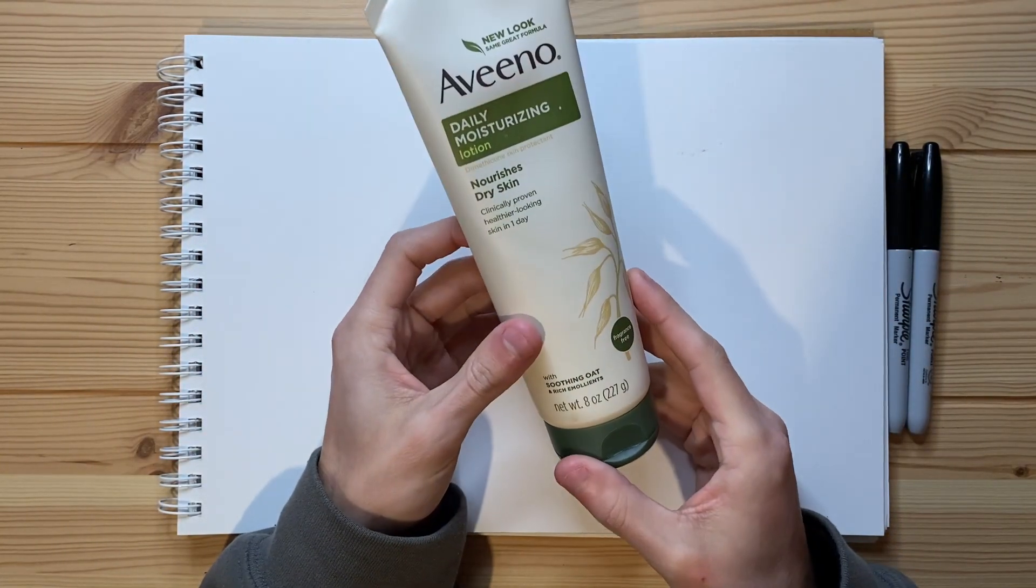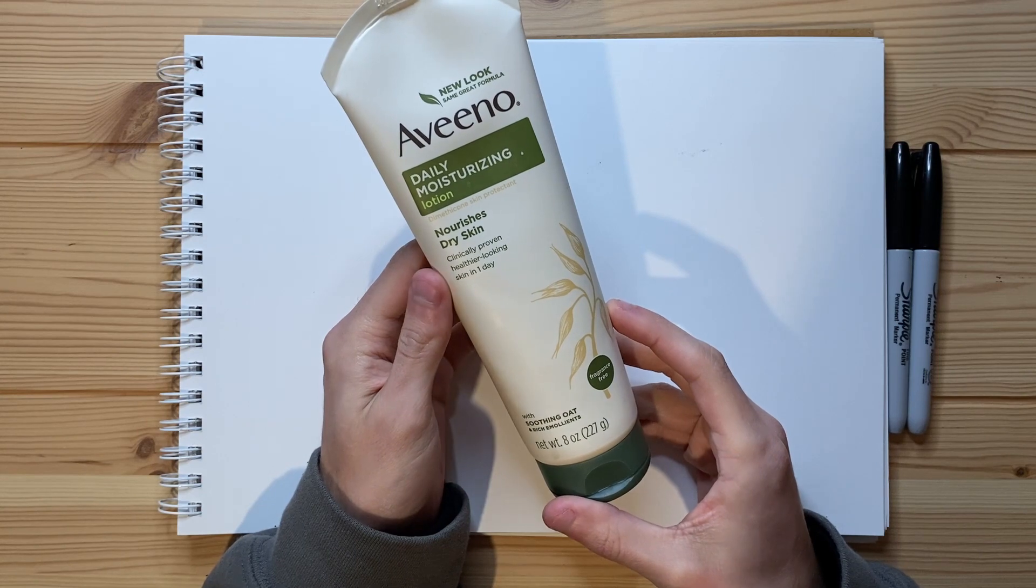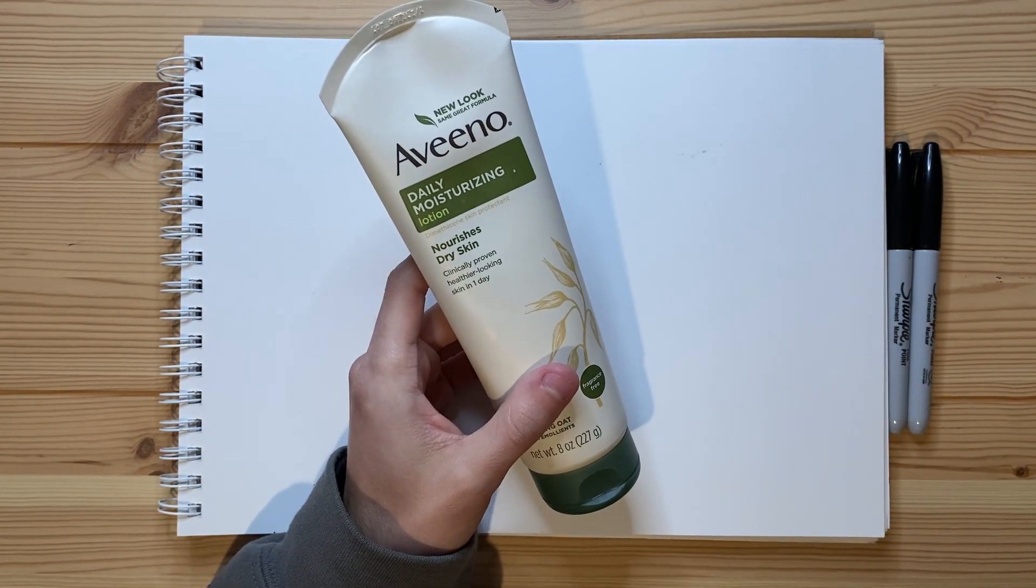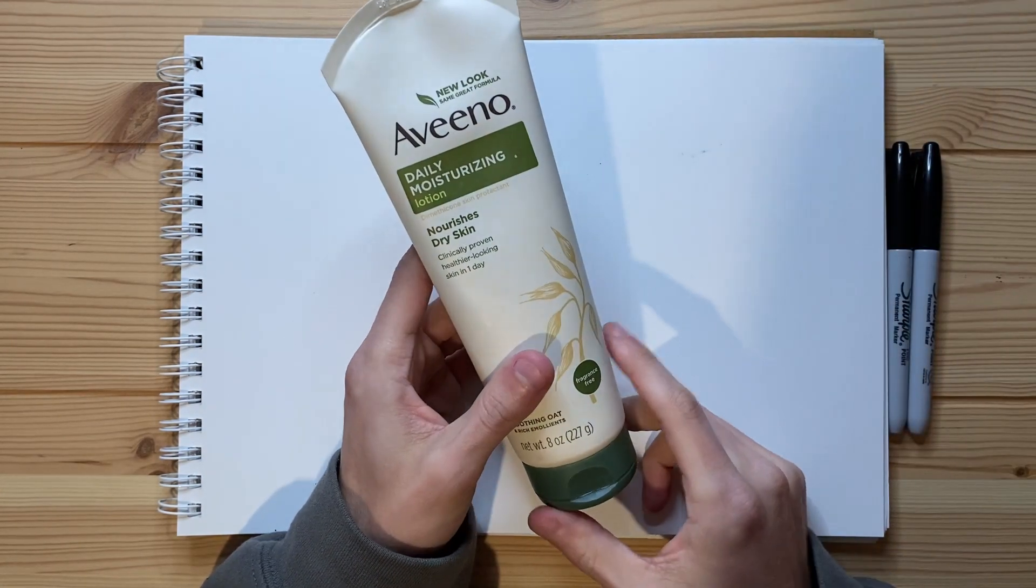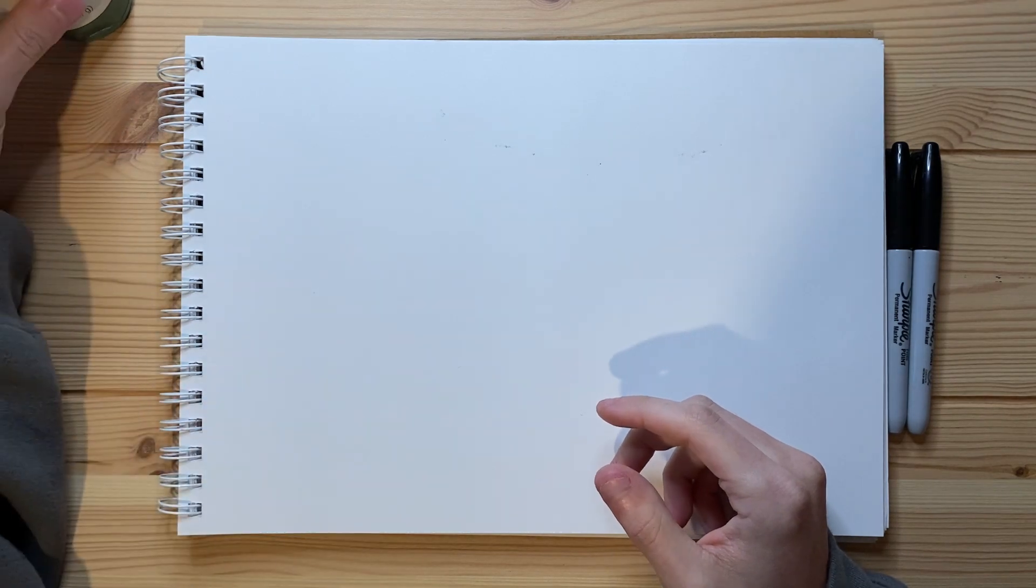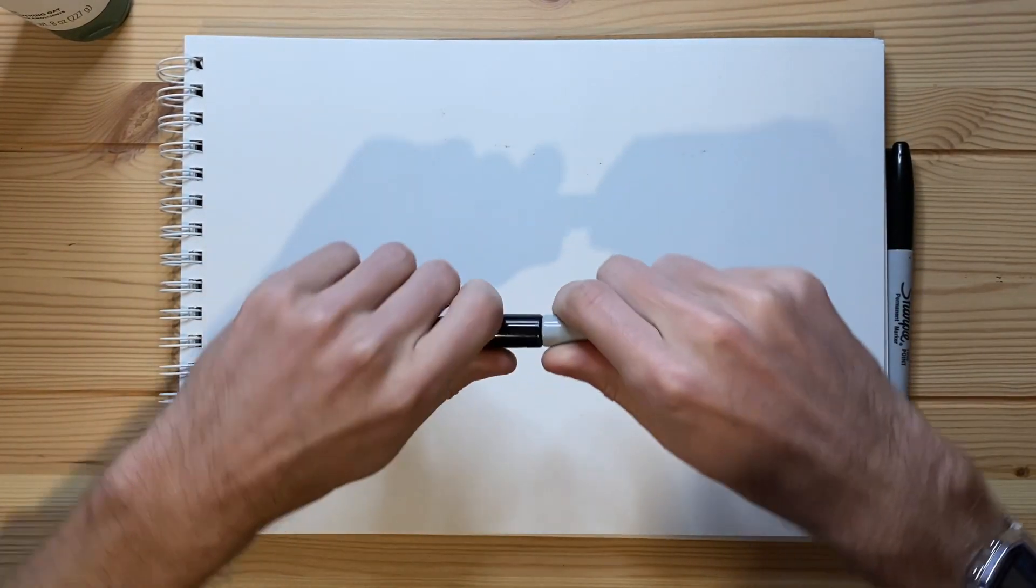I'm going to be using this unscented moisturizer bottle as my reference. So I'm just going to go ahead and put that right there, just slightly off screen, and now I'm going to get my Sharpie fine point marker all opened up.